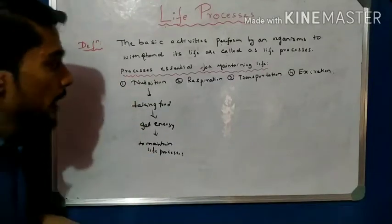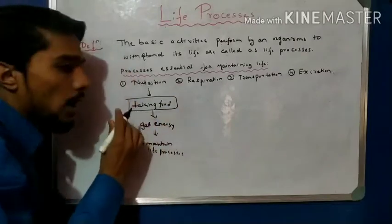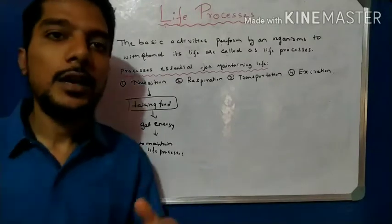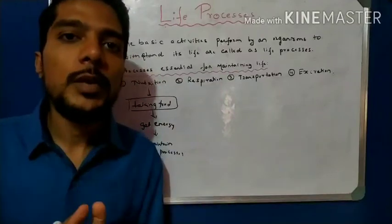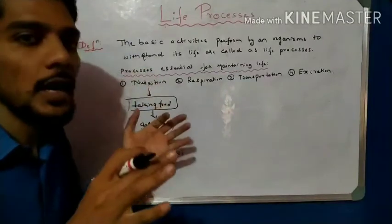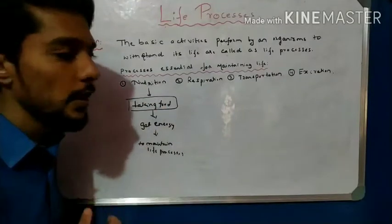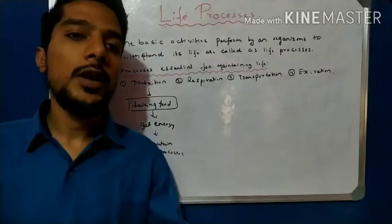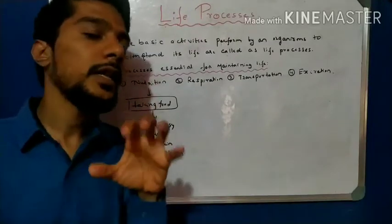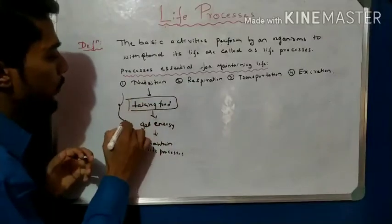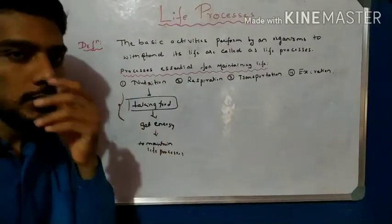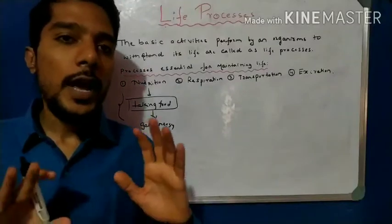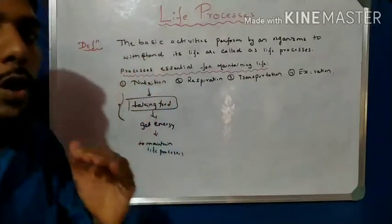Nutrition is very important. When organisms take food from the outer atmosphere, that is called nutrition — taking food from the surroundings. It may be autotrophic or heterotrophic, herbivorous, omnivorous, or carnivorous. All food sources may be from plants or animals. In this standard, we study different types of food: animal food and plant food.